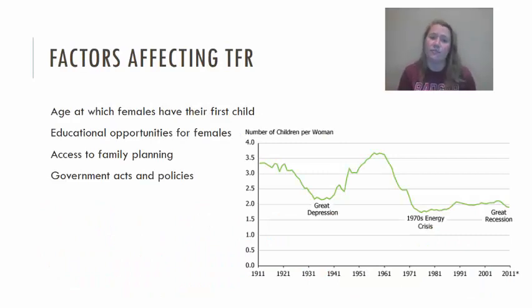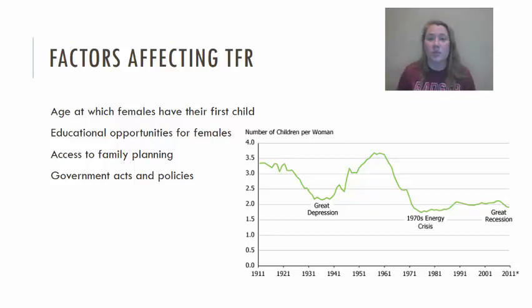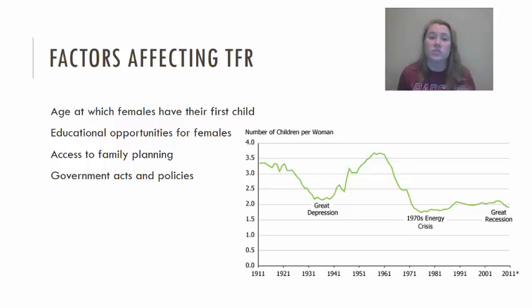There are several factors that affect total fertility rate. These include how old a woman is when she has her first child, how much education she has, what opportunities are available to her, whether she has access to family planning, and what government policies exist in that location — whether they encourage women's independence or mandate that women are subservient or dependent upon the males in their life.